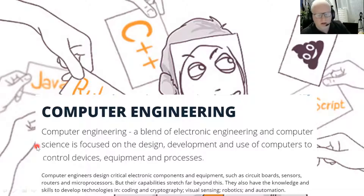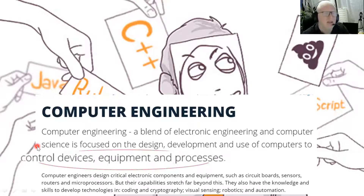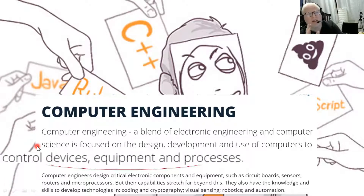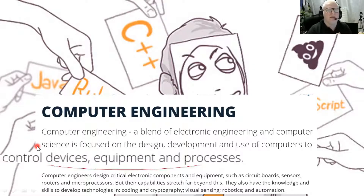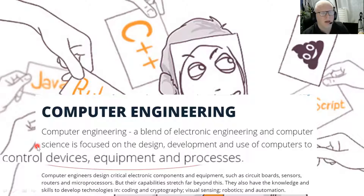The role of computer engineers is to control applications, equipment, and devices. One of these controllable systems may be a communication system. So computer engineering students will focus on the application of the communication system — they will implement the backstage system capable of controlling it. This is some sort of application for you as a computer engineer. That is my understanding of the definition for computer engineering students.